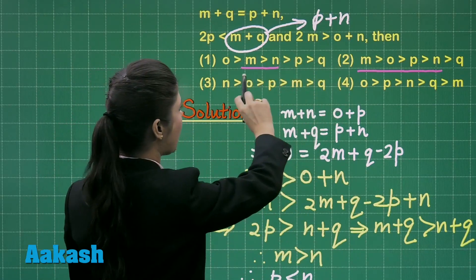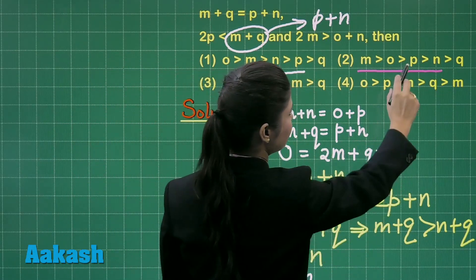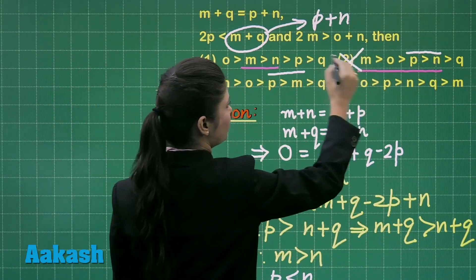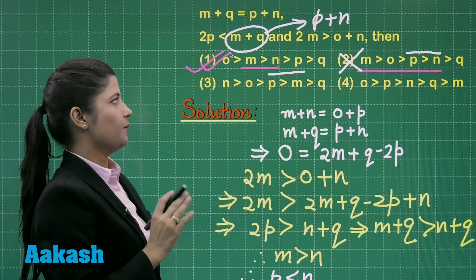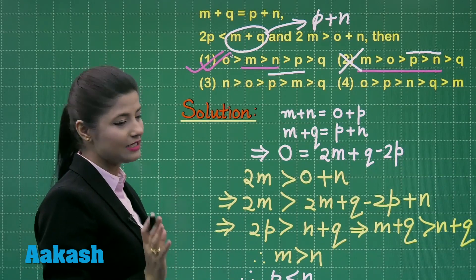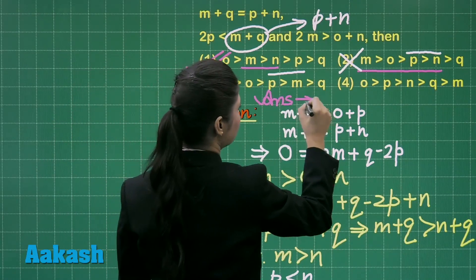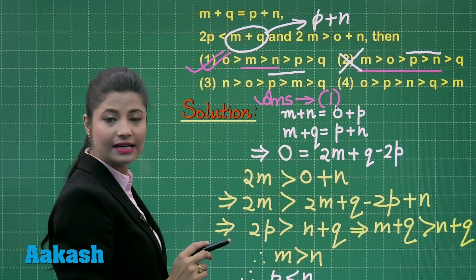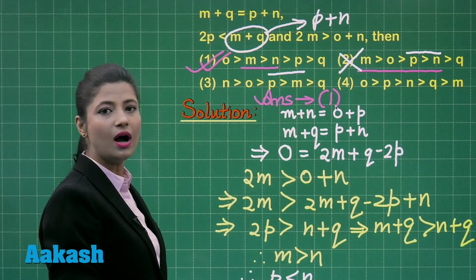Now let us consider the answer options. Out of these, in only option number 1, P is less than N. In option number 2, P is greater than N, so we cannot consider option number 2. The correct answer is option number 1 because it satisfies both conditions obtained from the given equations. The answer for this question is option number 1, which states O is greater than M, M is greater than N, N is greater than P, and P is greater than Q.